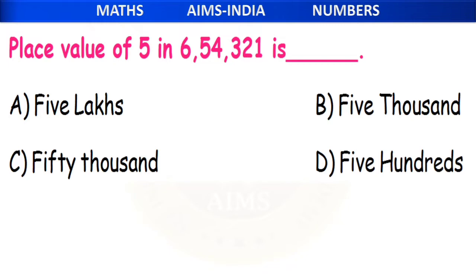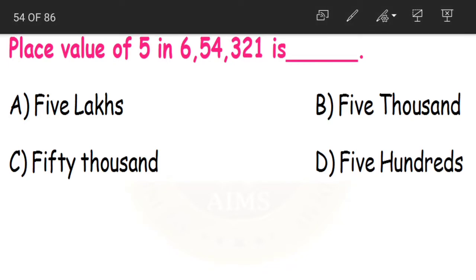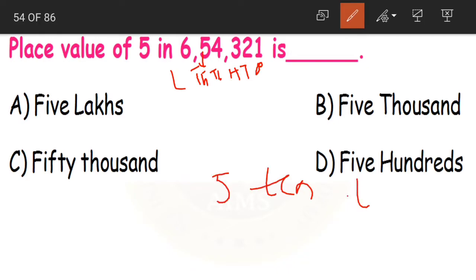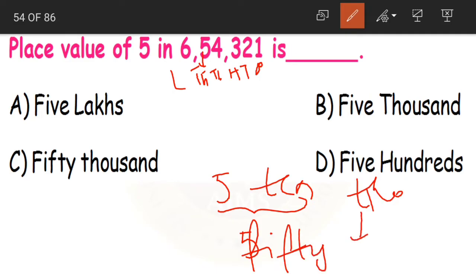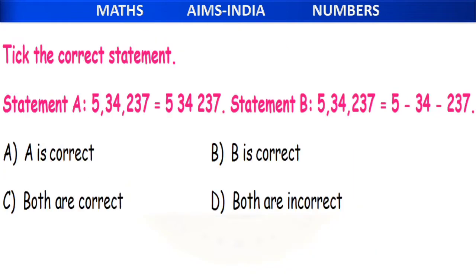Next question: the place value of 5 in 6,54,321 is dash. First, write the place values. 5 is in the 10,000s place. So its place value becomes 5 × 10,000 = 50,000. Option C, 50,000 is the correct answer.